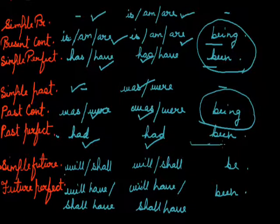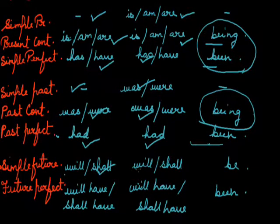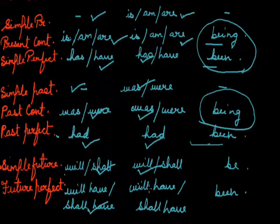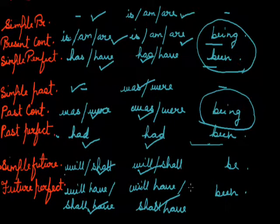We are taking the help of the other word. Simple future: 'she will drink tea' — 'tea will be drunk by her.' Future perfect: 'she shall have drunk tea' and the passive is 'tea shall have been drunk by her.'